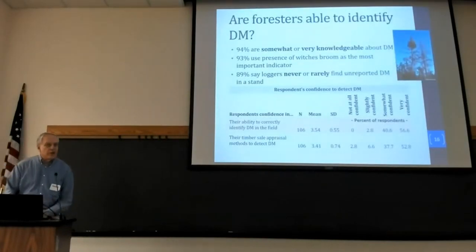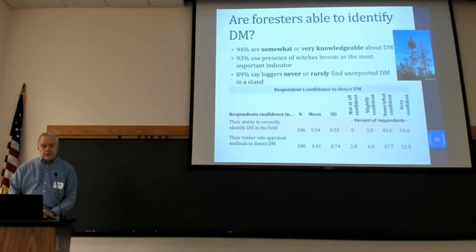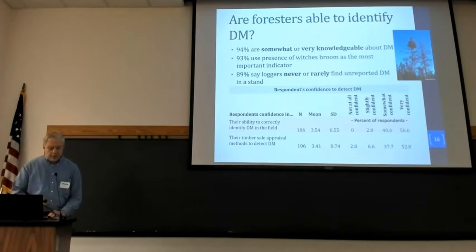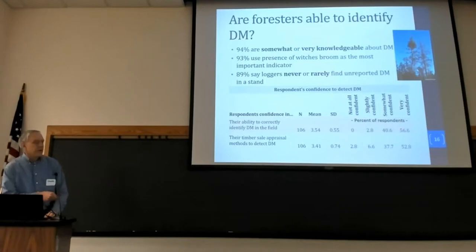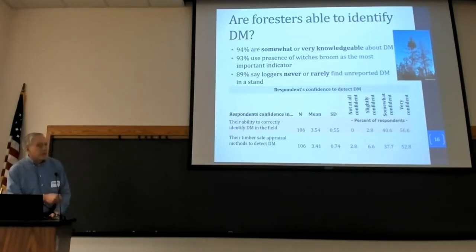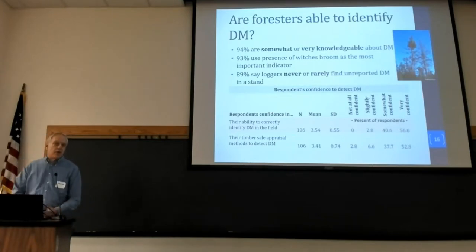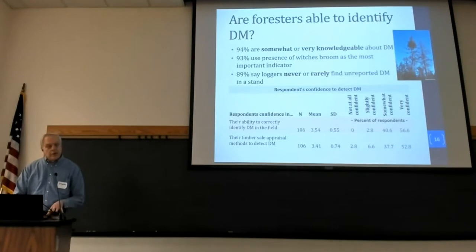One of our questions was: can you actually identify dwarf mistletoe? 94% said they were somewhat to very knowledgeable about it. 93% said they used witch's brooms as their primary indicator of its presence in a stand. We also asked them to rate their confidence: 97% said they were somewhat to very confident they could identify dwarf mistletoe in the field. Their timber appraisal methods could detect it about 90% of the time, and 89% said loggers were unable to find additional pockets of dwarf mistletoe in timber sales they had set up — so you're doing a pretty good job of identifying its presence within timber stands.